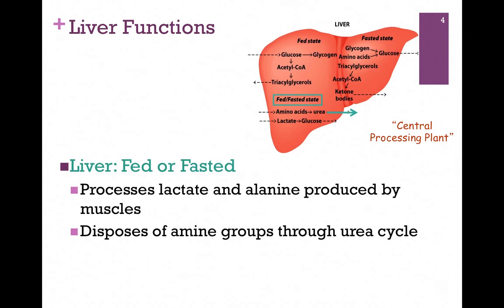There are certain processes that operate in the liver whether it's in the fed or fasted state — it's just a normal part of metabolism. This includes processing lactate and alanine that are produced by the muscles, and we'll see how this cycle operates in the next lesson. The liver also disposes of amine groups through the urea cycle.